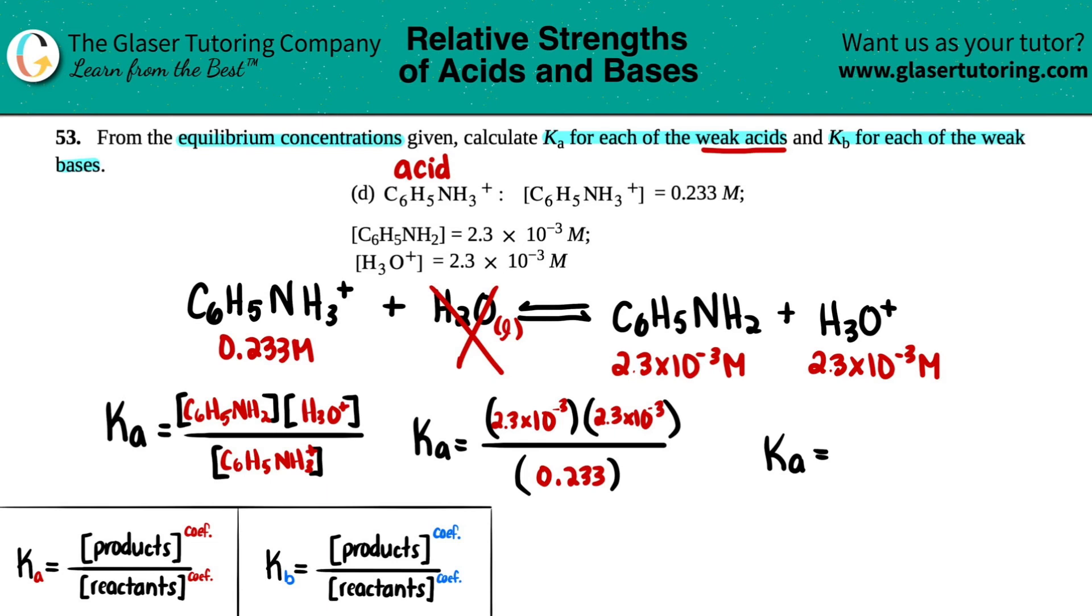2.3 times 10 to the negative third, times 2.3 times 10 to the negative third, divided by 0.233. And two sig figs, if we really care about it. So 2.3 times 10 to the negative fifth. And that is the Ka value.